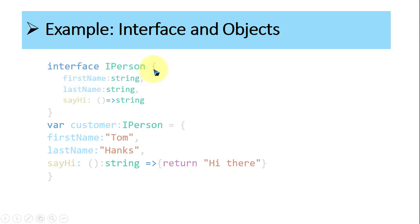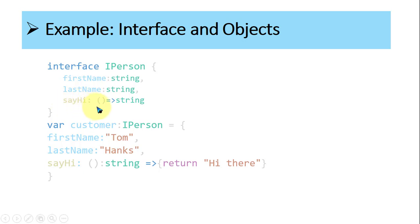Inside the curly brackets, we have: firstName colon string — this is a field; lastName colon string — also a field of type string. Then there is a method: sayHi with a round bracket, the arrow operator is used, and the return type of sayHi is a string. So in this way you can define an interface.